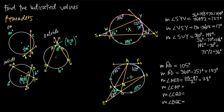For the measure of angle CAF, the vertex is on the circle. The angle measure is one half of the degree measure of the inscribed arc. The inscribed arc is arc AD plus arc CD, which is 103 plus 105 equals 208 degrees. Dividing by 2 gives 104 degrees as the measure of angle CAF.